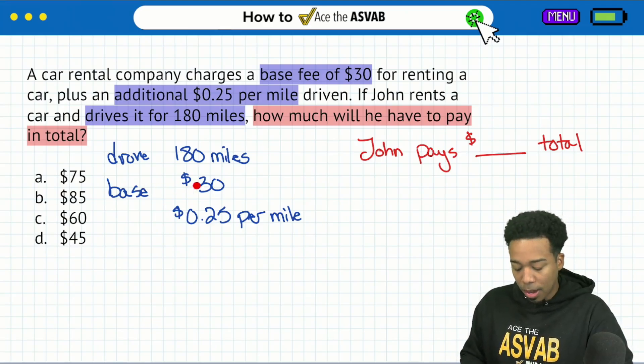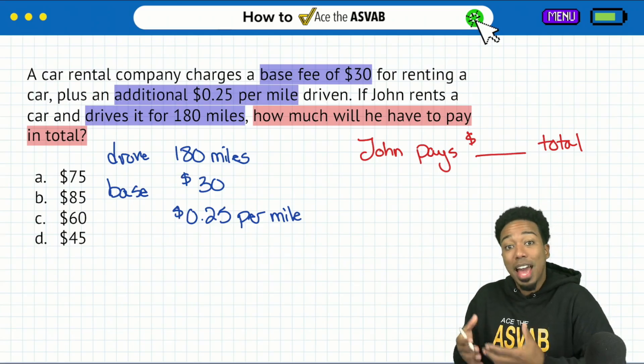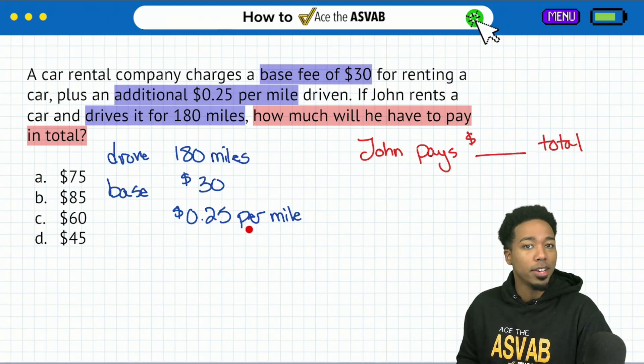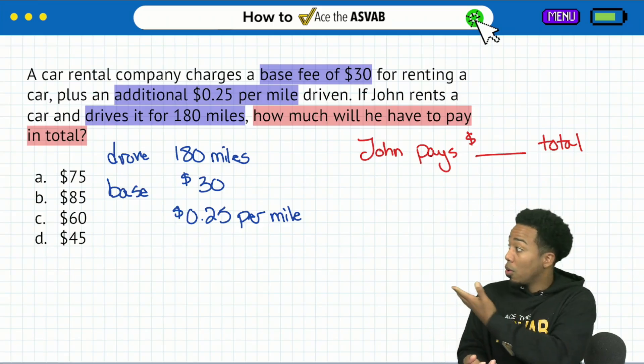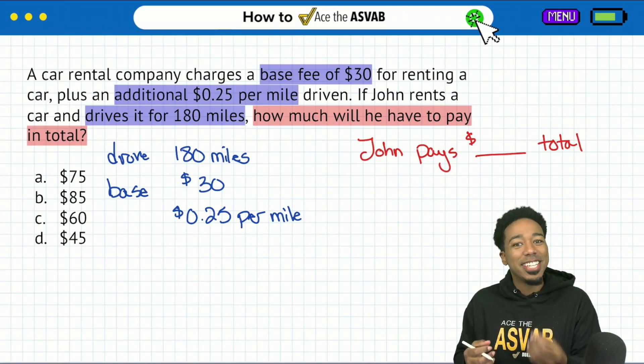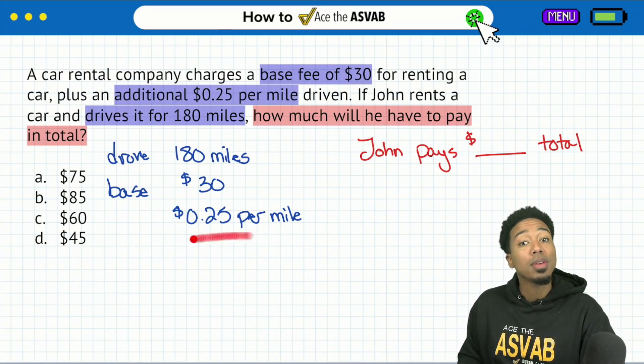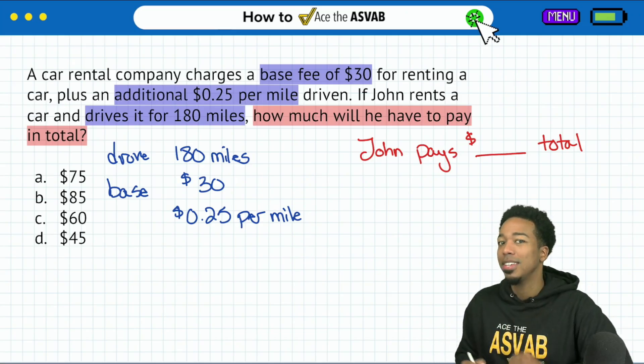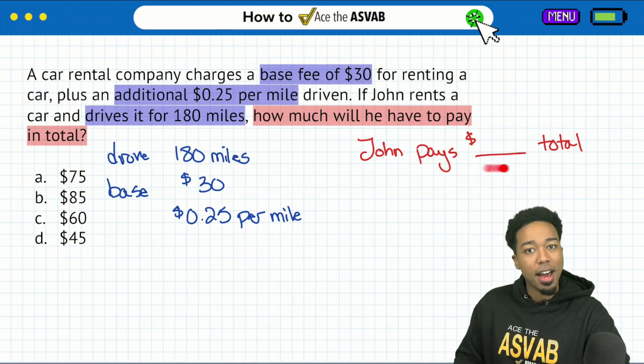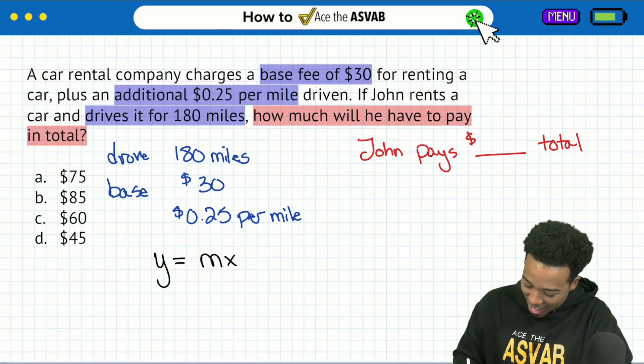So if I write that all down, base fee, $30 right there. And then we have the additional charge of 25 cents per mile. So boom, right there. And we are good. So how do we make sense of all of this? Again, how do I know that this is Y equals MX plus B? That's the big question. How can I repeat the success beyond this question? And don't forget, we have another question right after this one. So stay tuned. So the reason I know that this is going to be Y equals MX plus B is because I have a base amount, an initial amount, a starting amount. And then on top of that, what I notice is I have a rate.